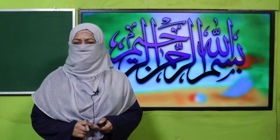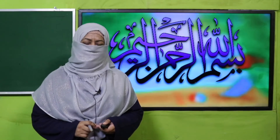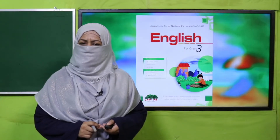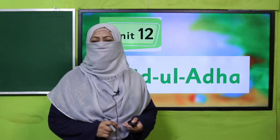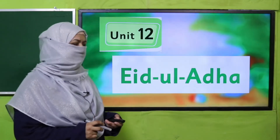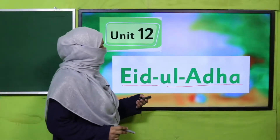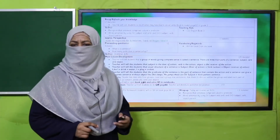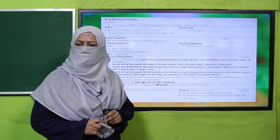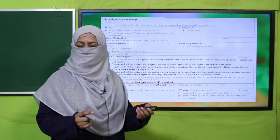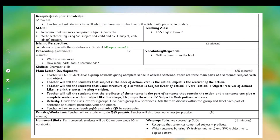Bismillahirrahmanirrahim. Assalamu alaikum, my dear students. How are you? I hope you are in the best of health. I welcome you to my class — English Book Grade 3. We are learning Unit 12, its title is Idul Adha. My dear fellow teachers, this lesson plan, PowerPoint presentation, and worksheet links are given — you may click it, download it, follow it as is or modify it for your convenience.